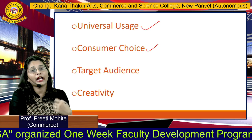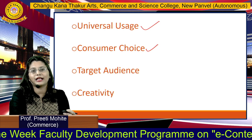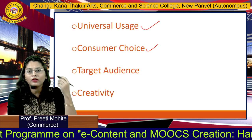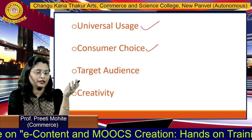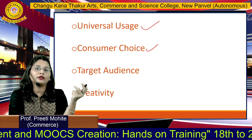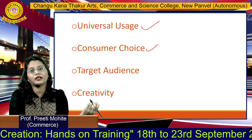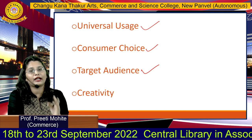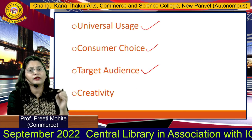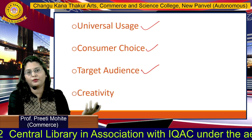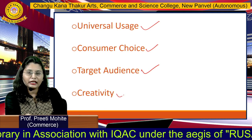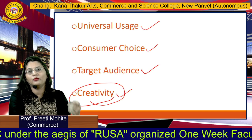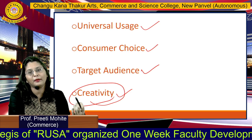Next is consumer choice. Advertising facilitates consumer choice, meaning when an advertisement is produced, it gives all product information related to the price, quality, and main features of that product so that the consumer can make an informed choice. Then there is target audience — for example, if any luxurious product is there, the target audience will be rich people and not lower income people. And creativity is a very important feature: more creative advertising will give more impact.